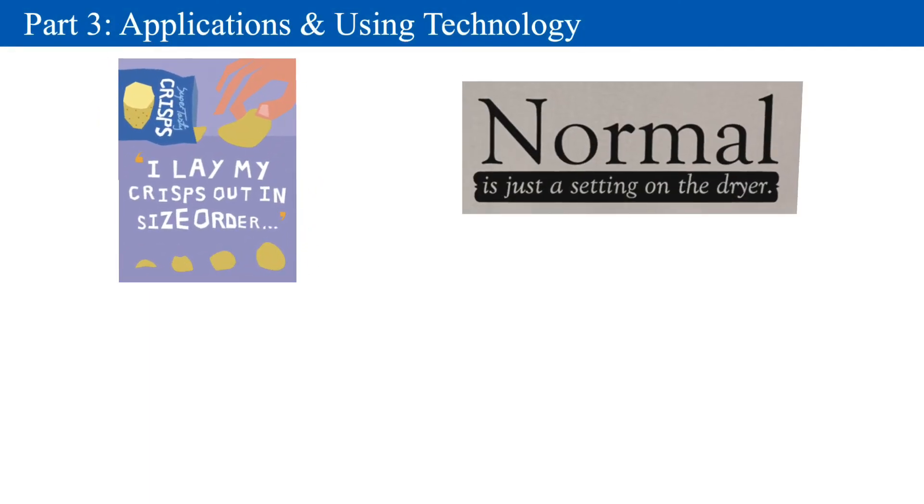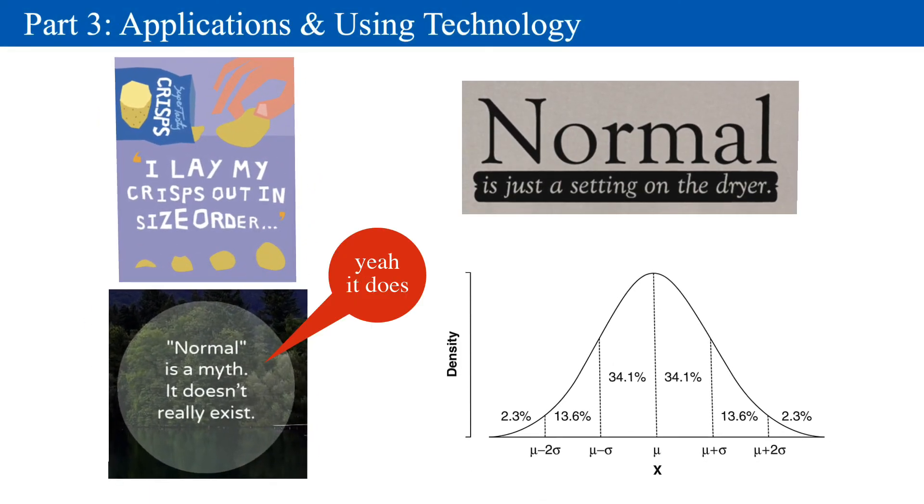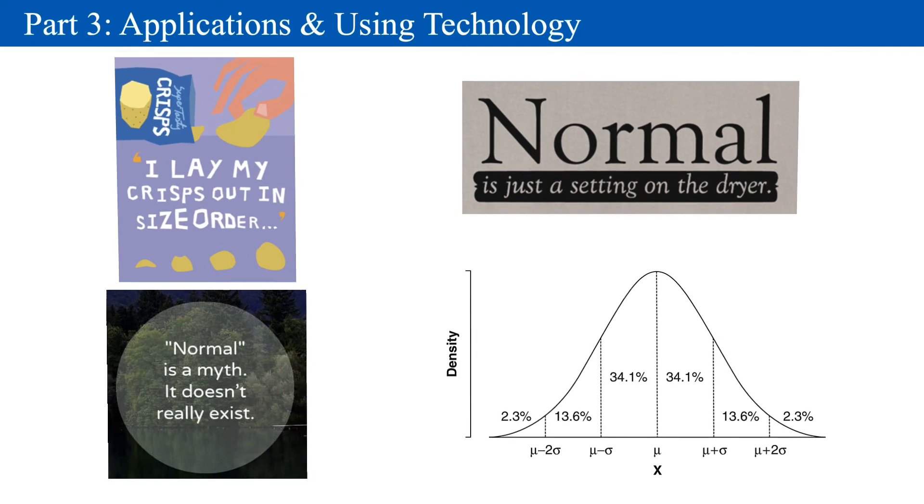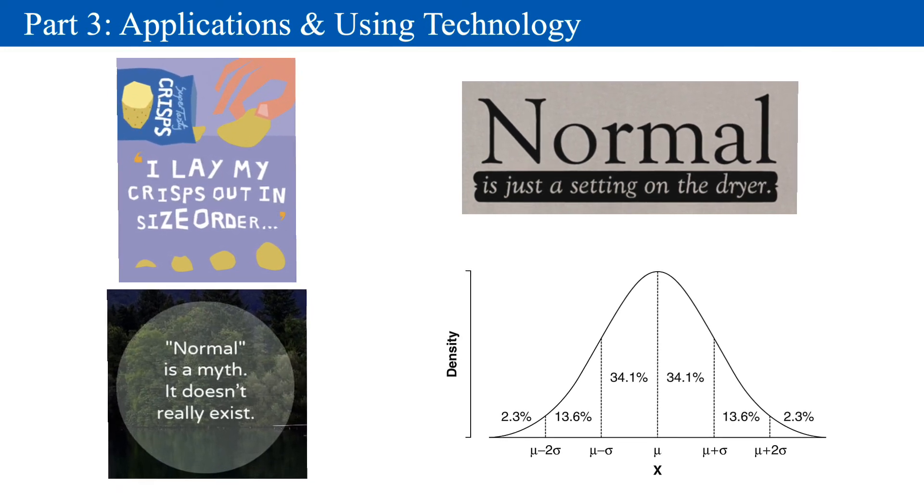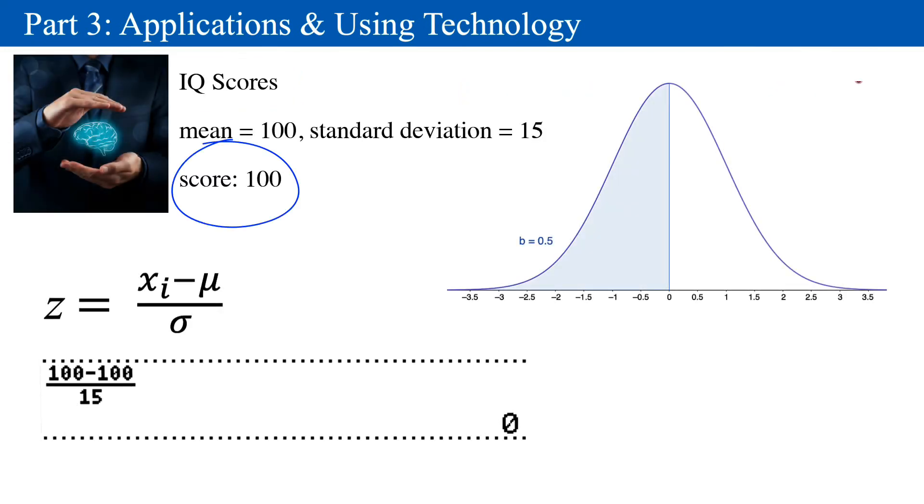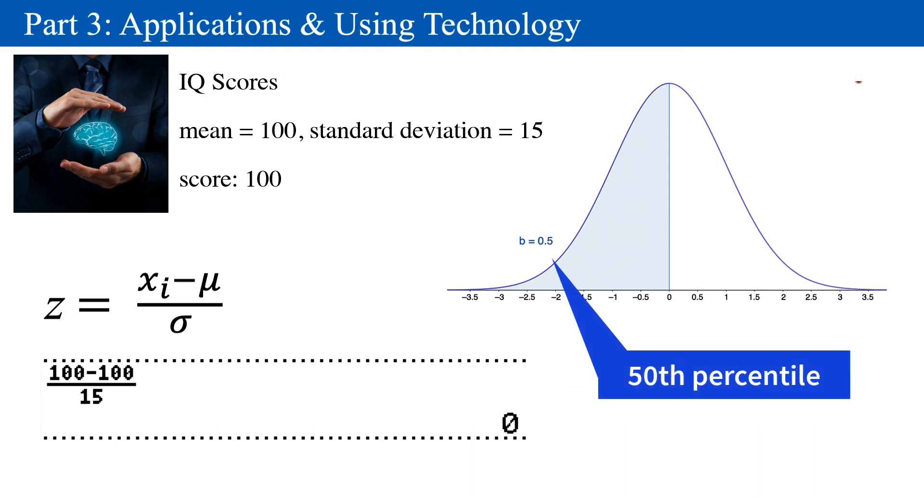The beauty of the normal distribution is that you can easily express some complicated ideas into plain language. Returning to the IQ examples, an IQ of 100 has a z-score of 0 and sits exactly in the middle. Congratulations to that person. They are at 0.5 of the area, and that can be described as the 50th percentile. That's as normal as you can get.